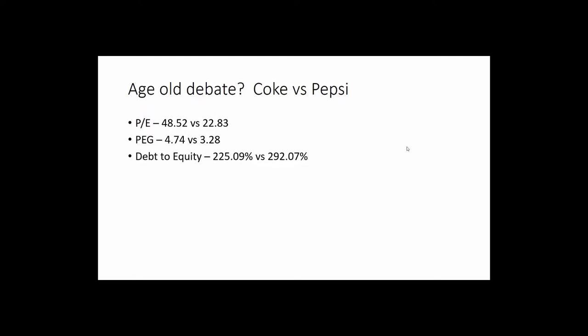Debt-to-equity — these numbers come out as a percentage and we have to take this into consideration because it shows how aggressive a company can be when trying to accumulate assets. The numbers here are 225% for Coke and 292% for Pepsi. This tells us Pepsi is a little more aggressive in accumulating assets. These high numbers can be a bit scary — you want to make sure they're using their debt wisely. Overall, Coke appears a little more conservative than Pepsi.